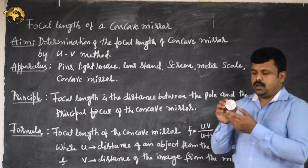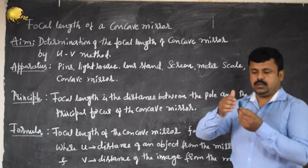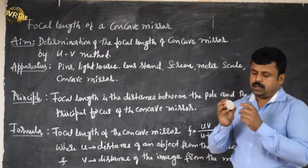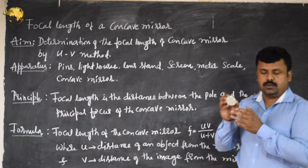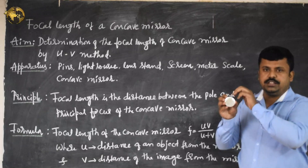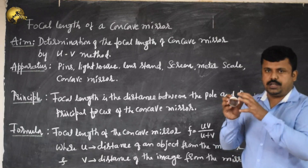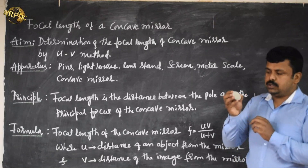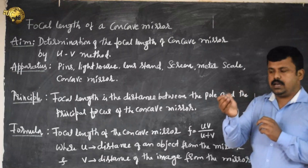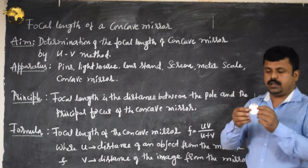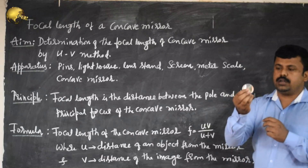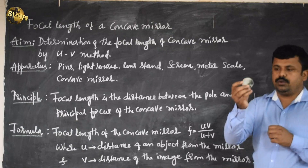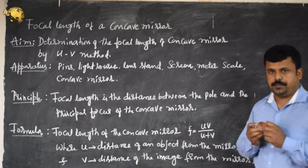One surface of the concave mirror is silver, and the other surface caves inside. So concave refers to caving inside. You can easily identify it, or when you touch it you will get to know that it caves inside — so it will be a concave mirror.